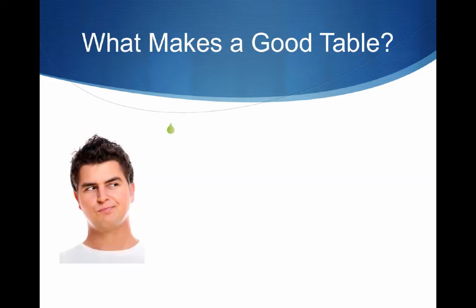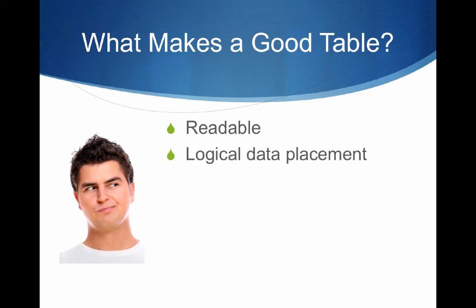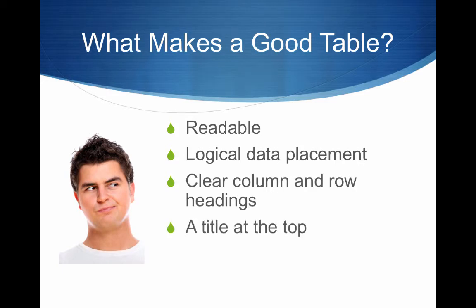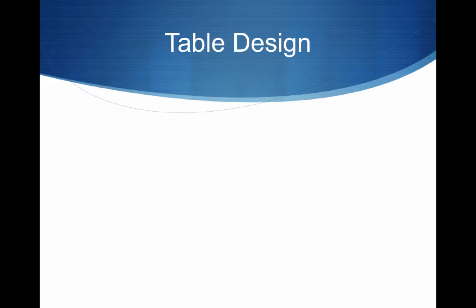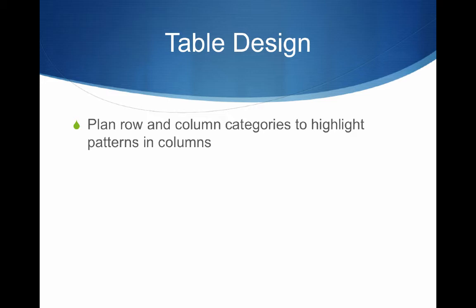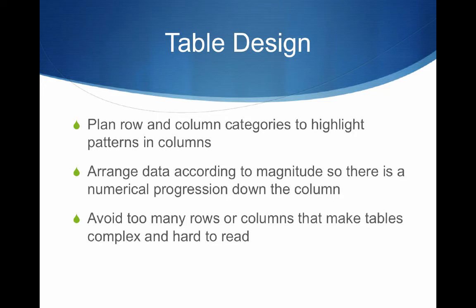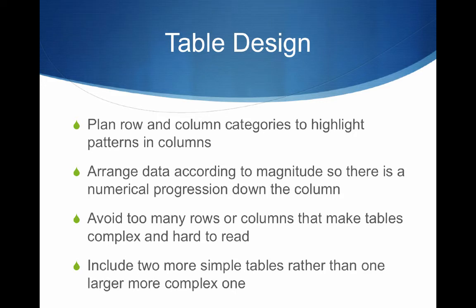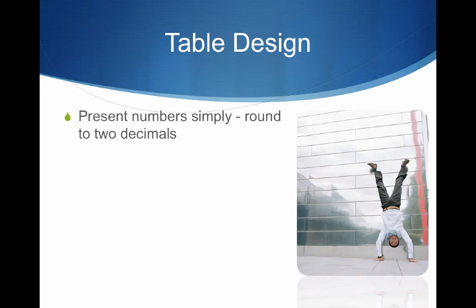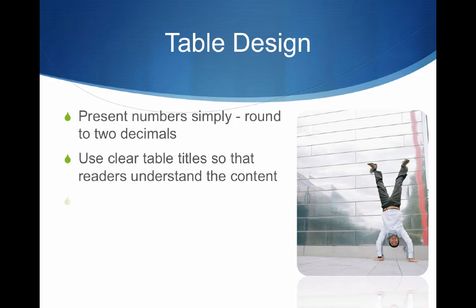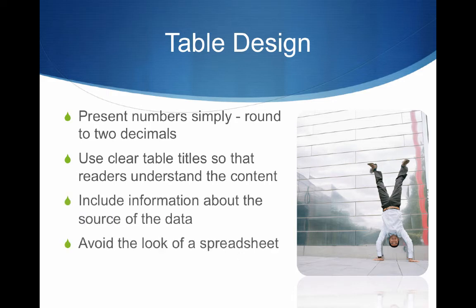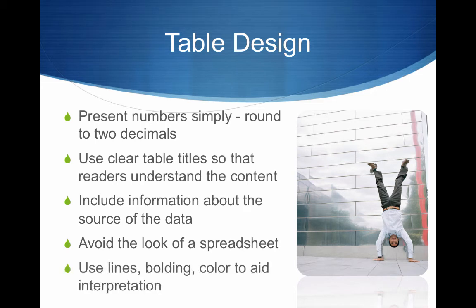What makes a good table? You want to make sure that it's readable, that there's a logical data placement, that there are clear column and row headings, that there's a title at the top, clear reporting units, and you want to follow APA style for titles. Let's look at table design. Plan your row and column categories to highlight patterns in columns. Arrange the data according to magnitude so there's a numerical progression down the column. Avoid too many rows or columns. It's better to include two or more simple tables rather than one larger complex one. Present your numbers simply — in most cases, round to two decimals. Use clear table titles, include information about the source of the data, avoid the look of a spreadsheet, and use lines, bolding, and color to aid interpretation.